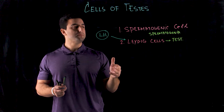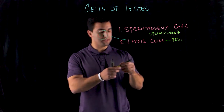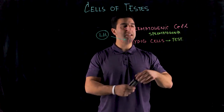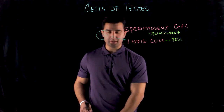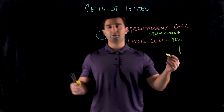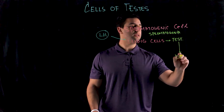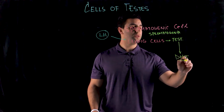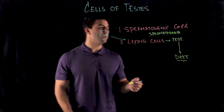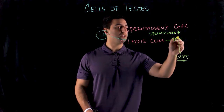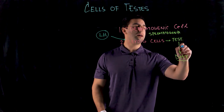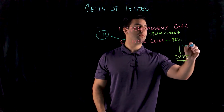During puberty, there is a high prevalence of testosterone being converted into DHT — dihydrotestosterone. DHT is a more potent form of the steroid hormone, and it is the actual hormone that gives the secondary sex characteristics of males during puberty. This conversion is created by the enzyme 5-alpha-reductase.